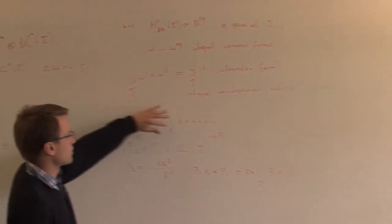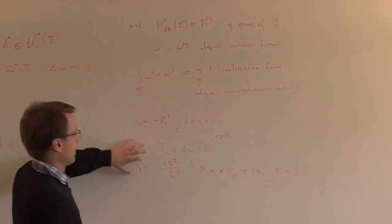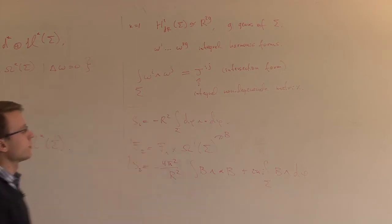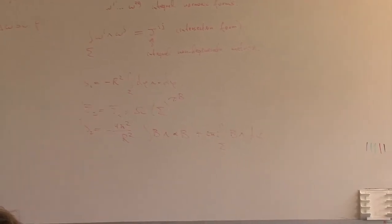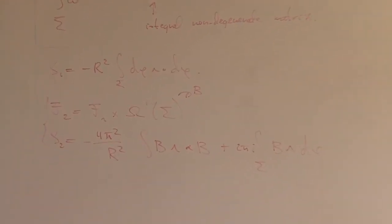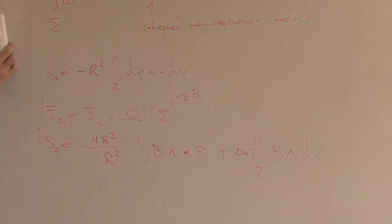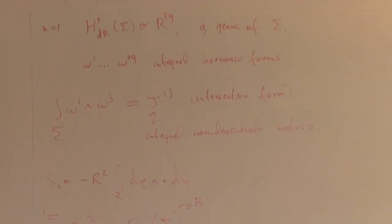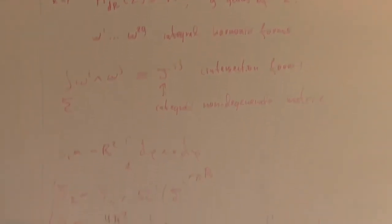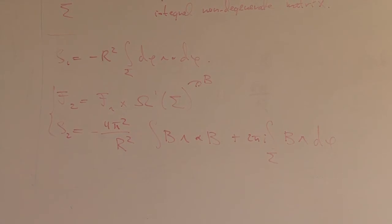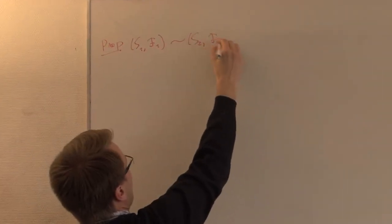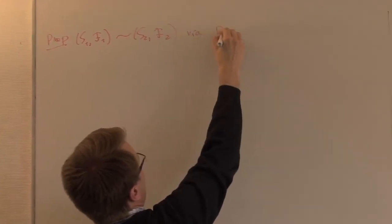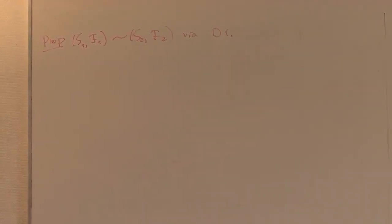I started with the action functional involving d-phi wedge star d-phi. Let me enlarge the space of fields by adding an extra field: F2 equals F1 — maps from sigma into S1 — cross one-forms on sigma. Call that extra field B. The new action functional is minus 4-pi-squared over R-squared times the integral of B wedge star B, plus 2-pi-i times the integral of B wedge d-phi.